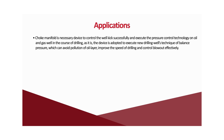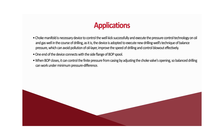A choke manifold is a necessary device to control well kicks successfully and execute pressure control technology on oil and gas wells during drilling. The device executes the new drilling technique of balance pressure drilling, which avoids pollution of the oil layer, improves drilling speed, and controls blowouts effectively. One end connects with the side flange of the BOP spool. When the BOP closes, the choke valve's opening is adjusted to control finite casing pressure so that balance drilling works under minimum pressure difference.